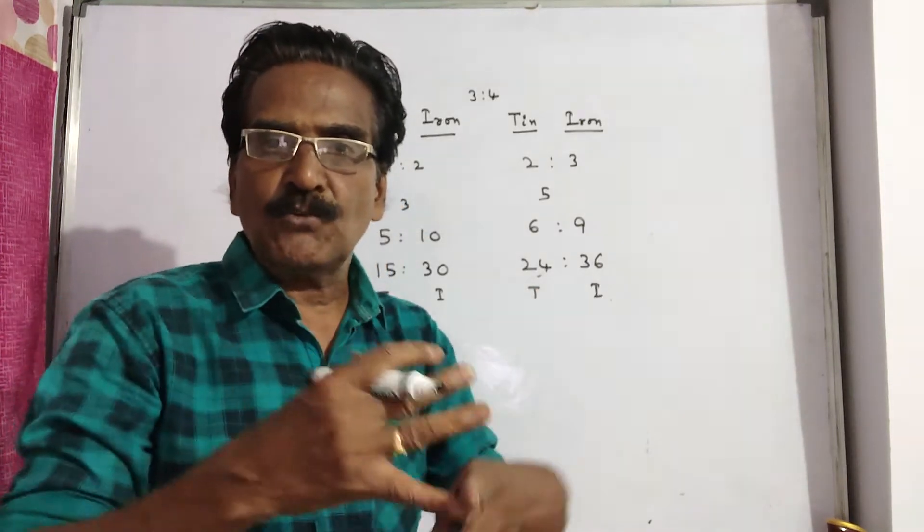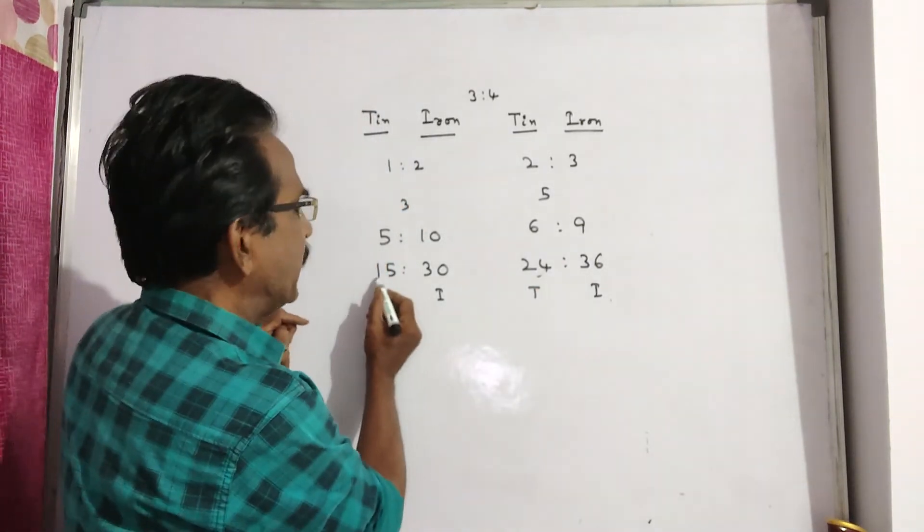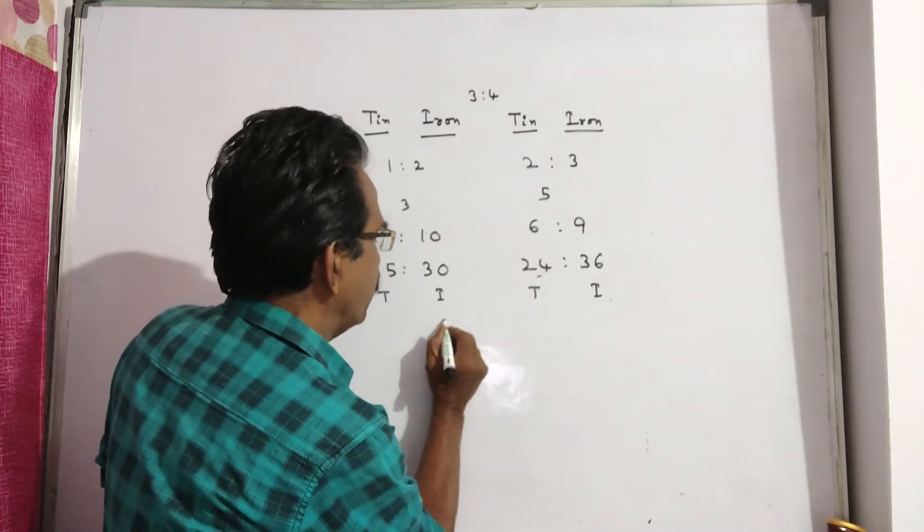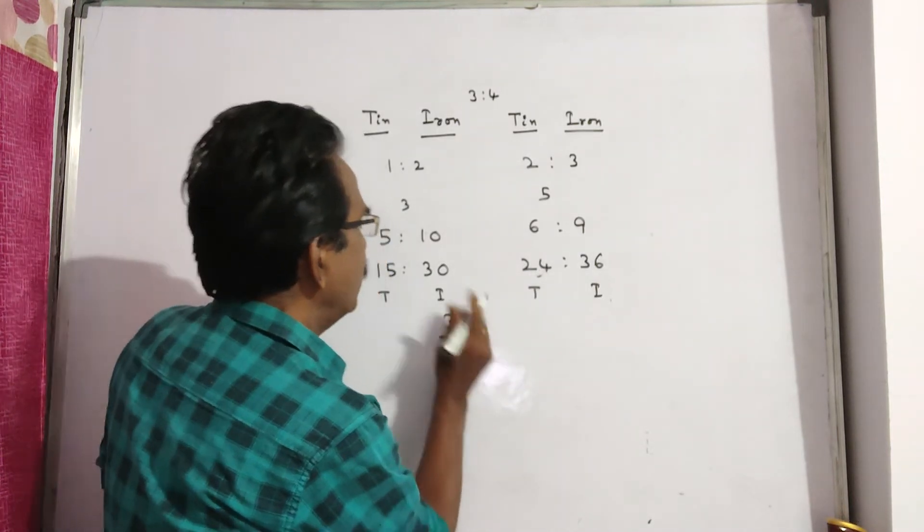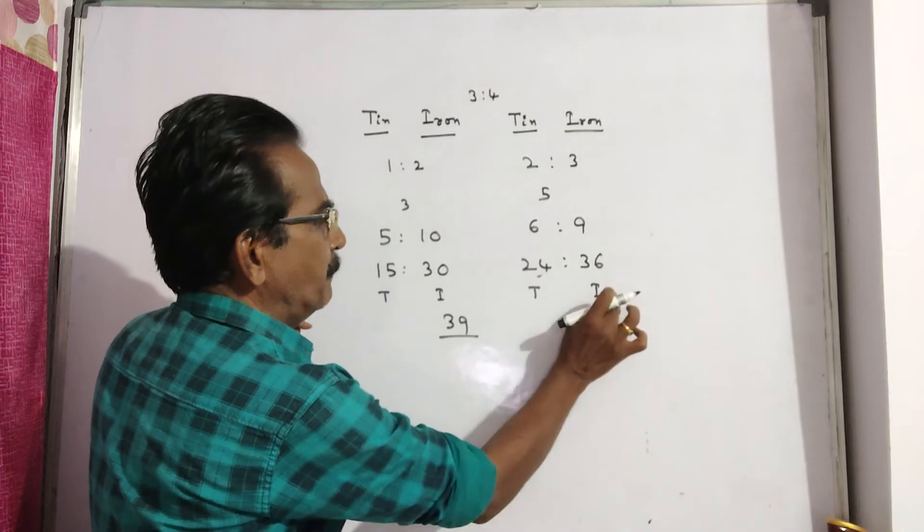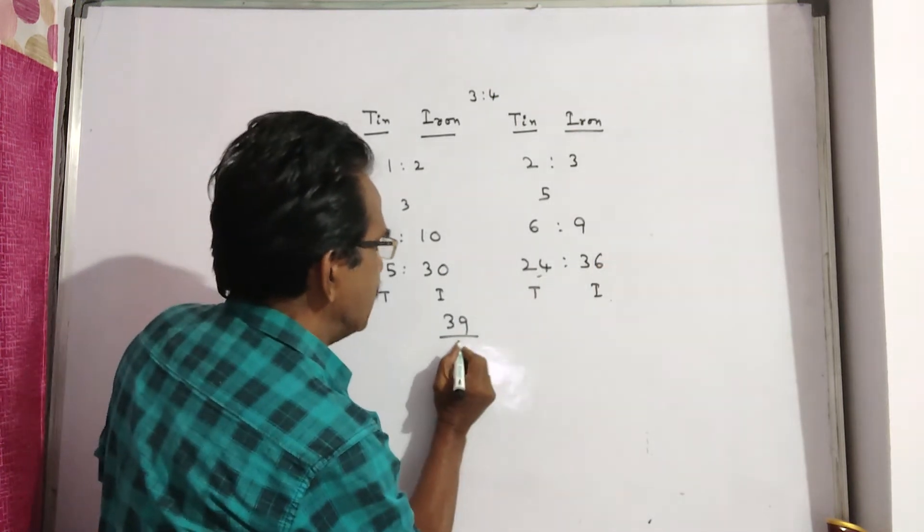Now if these two quantities are mixed. Tin plus tin, 15 plus 24 is 39. Iron plus iron, 30 plus 36 is 66.